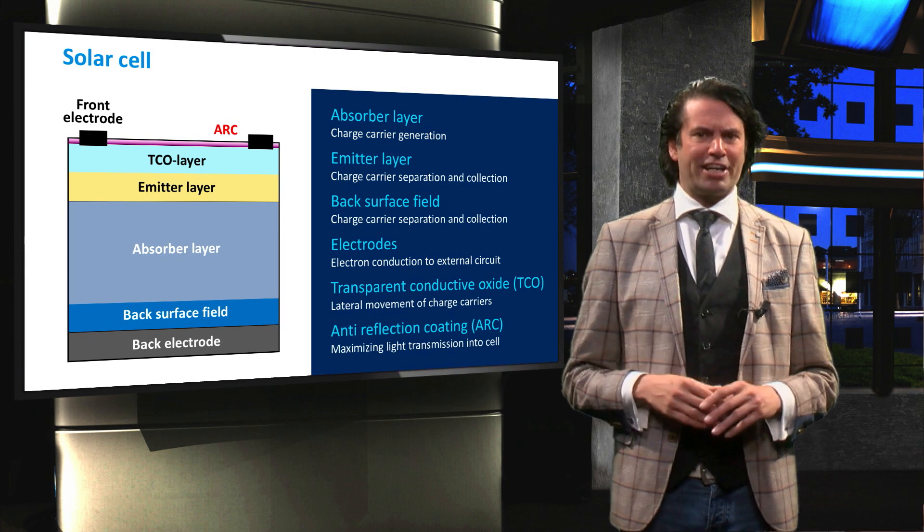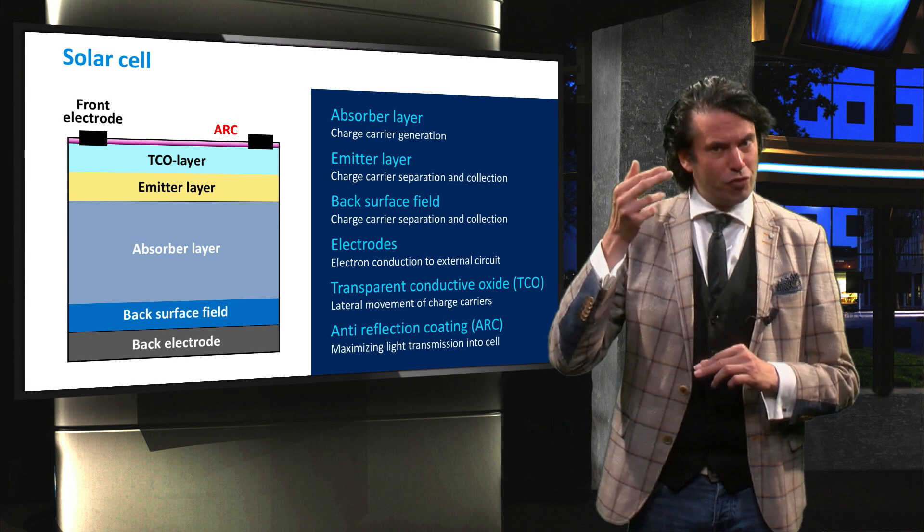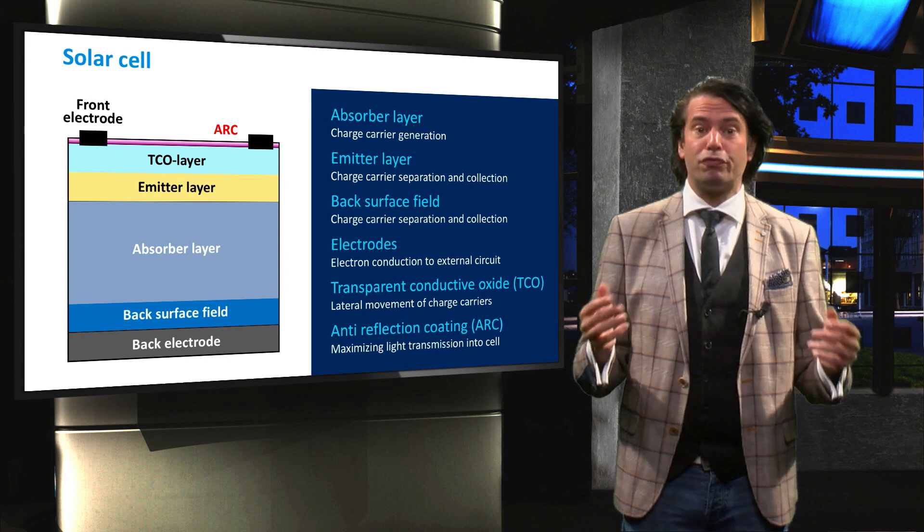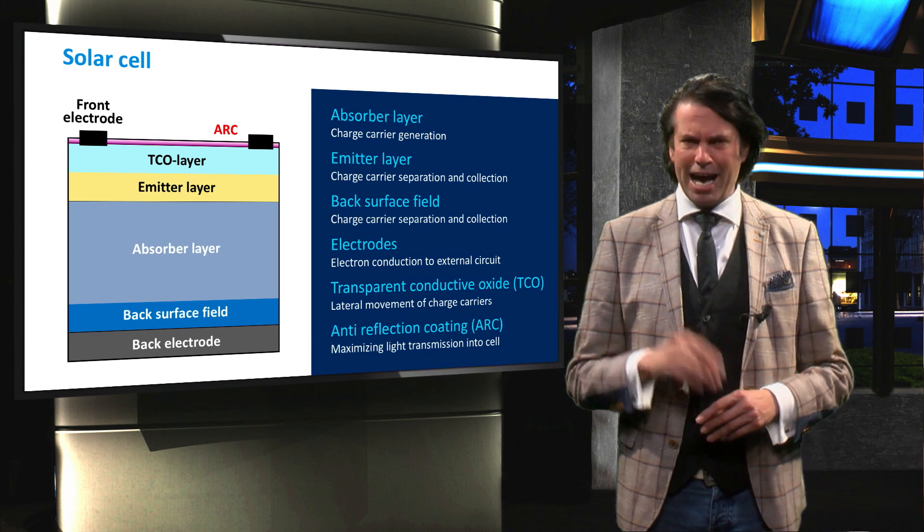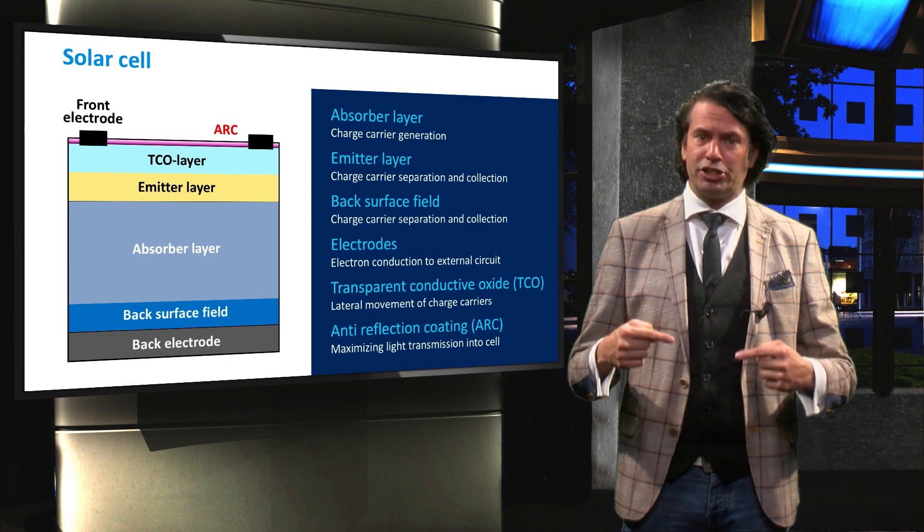Finally, an anti-reflection coating is placed at the front of the cell to reduce the front surface reflection and maximize the light transmission into the cell.